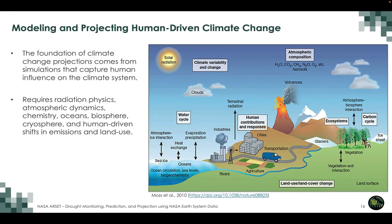Modeling and projecting human-driven climate change requires capturing human influence on the climate system. It requires radiation physics, atmospheric dynamics, chemistry, oceans, biosphere, cryosphere, and human-driven shifts in emissions and land use. The model has to include natural variability processes that change atmospheric composition and land surface, but on top of that, human-driven factors must be included such as industries, urbanization, land use change, and transportation.